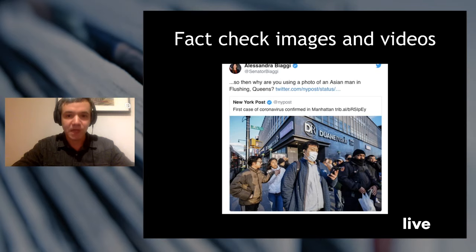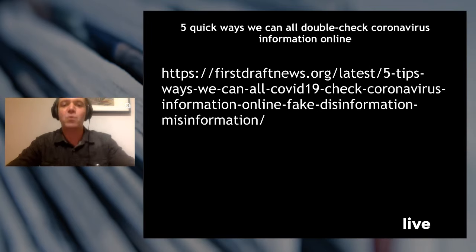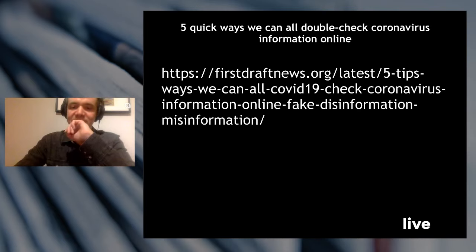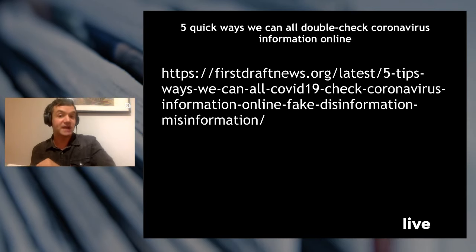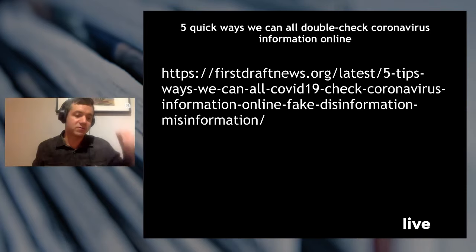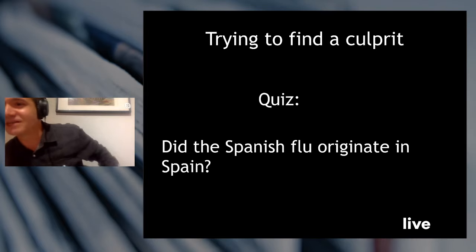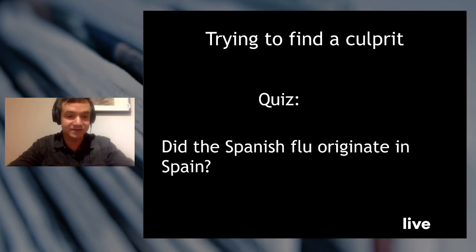There are also a lot of examples of people trying to find a culprit or a scapegoat. My father shared something with me this week, and he's even starting to doubt some of the things he normally shares — and that's good, it means he's learning to be a little more careful with information. Here's a quiz question: did the Spanish flu originate in Spain? The answer is no — most indications are that it started elsewhere. It was named the Spanish flu because during World War One, people were unhappy that Spain had not joined the war, and the name stuck.